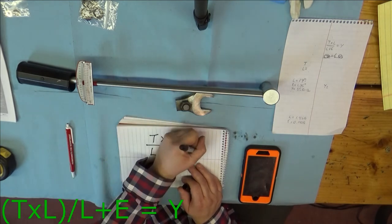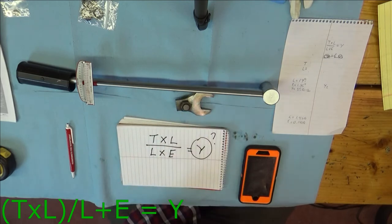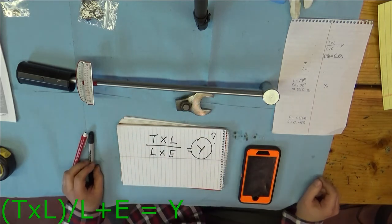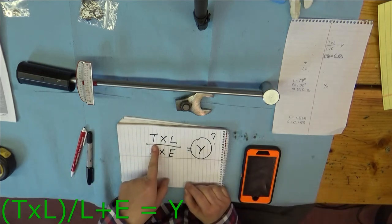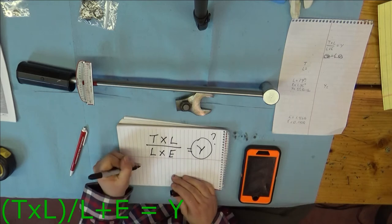So we'll call that Y. So we're solving for Y. Well, there's a few things you've got to do. First of all, you've got to know what your torque is that you want to tighten it to. In our case, it's going to be 55 foot pounds.